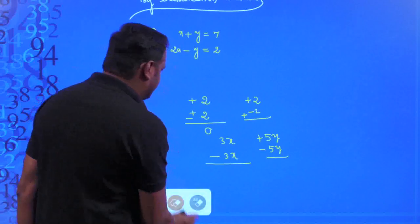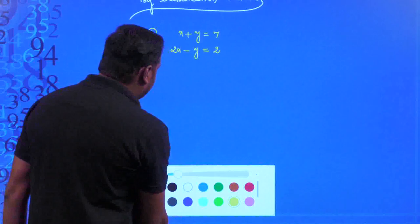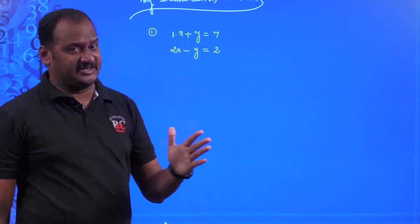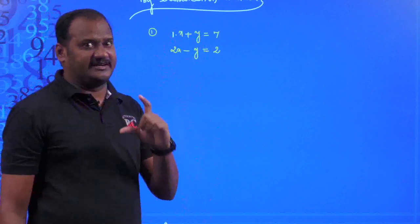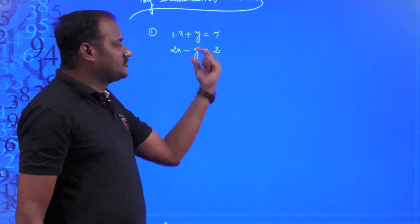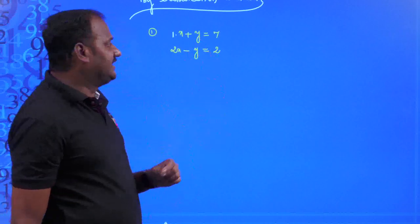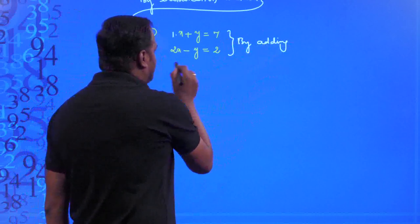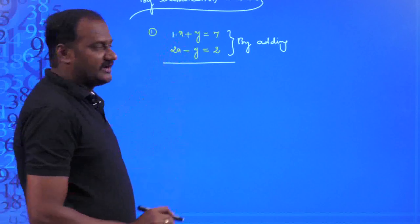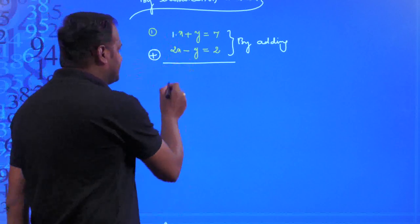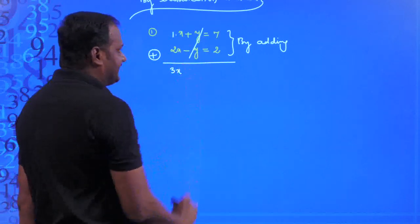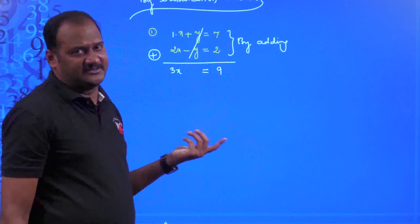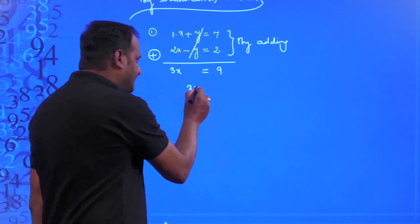Adding the two equations: (x + 2x) + (y − y) = 7 + 2, giving 3x = 9. Therefore the value of x is 3.